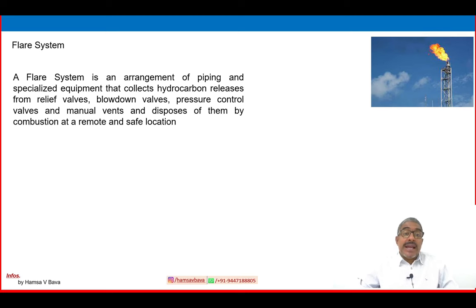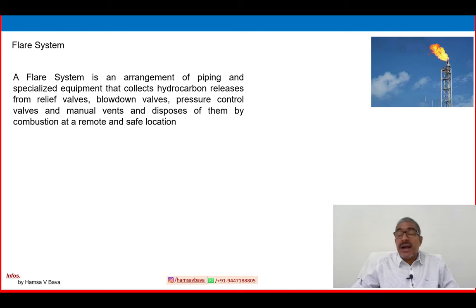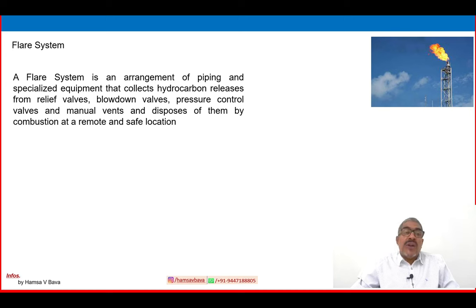Sometimes it is necessary to get rid of excess gas and occasionally liquids from a facility, and the safest way to do that is the flare system. A flare system is an arrangement of piping and specialized equipment that collects hydrocarbon releases from relief valves, blow down valves, pressure control valves, and manual valves, and disposes of them by combustion at a remote and safe location.